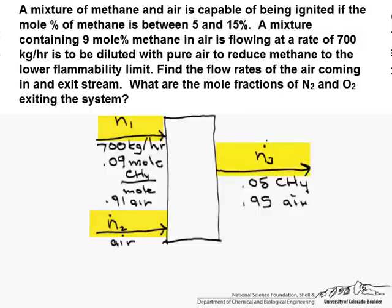So actually we have three unknowns, and by the way, what we could do is we can take the mole percents in the first stream and change them to mass percents. The reason not to do that is coming out we're given mole percents, and in addition we have to find mole fractions of N2 and O2. So we have our three unknowns.